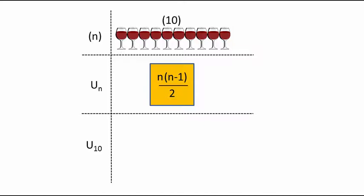So, as we substitute 10 into the formula, we get 90 over 2, which means there will be 45 clinks with 10 glasses. Problem solved.